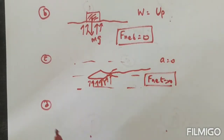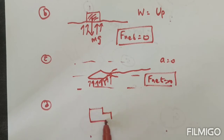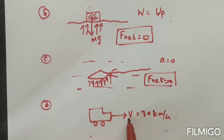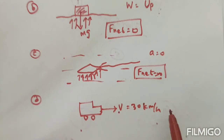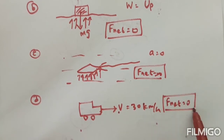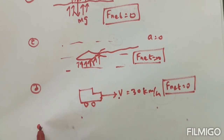Question (d): A car moving with constant velocity of 30 kilometers per hour. The initial velocity and final velocity are the same — constant velocity — so acceleration is zero and therefore the net force is zero.